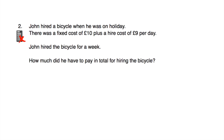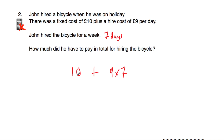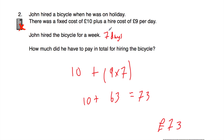Question number two: John hired a bicycle when he was on holiday. There's a fixed cost of £10 — so he pays £10 no matter what — and a hire cost of £9 per day. He hired the bicycle for a week, which is seven days. So nine multiplied by seven is £63, and then adding the £10 gives us £73. It costs £73 to hire the bicycle.